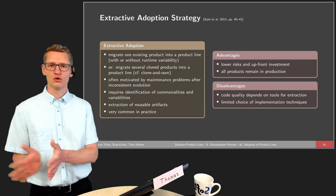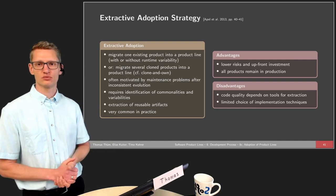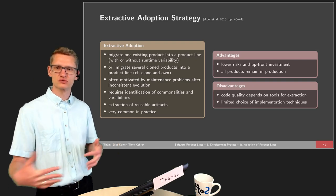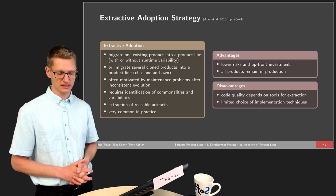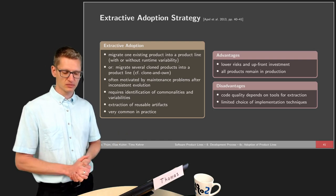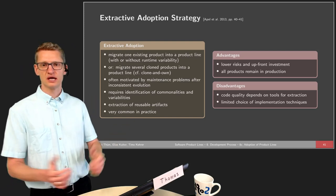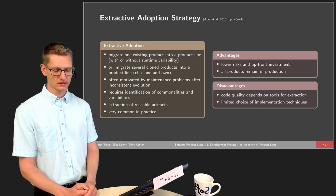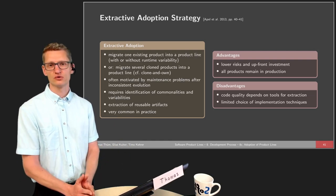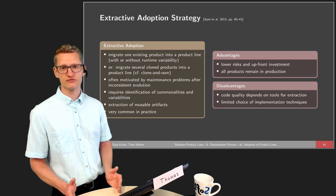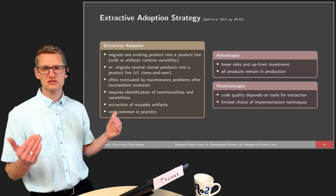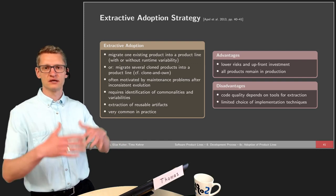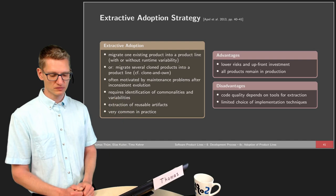These cloned products might have resulted from clone-and-own, which is typically not considered a product line technique. When migrating to a product line we might incorporate several clones and identify all their commonalities and differences. This is often motivated by maintenance problems after inconsistent evolution. Many companies using clone-and-own for a while face such problems and are then motivated to do something better — which is also why this lecture focuses so heavily on different implementation techniques, as they are the main source of product line success.